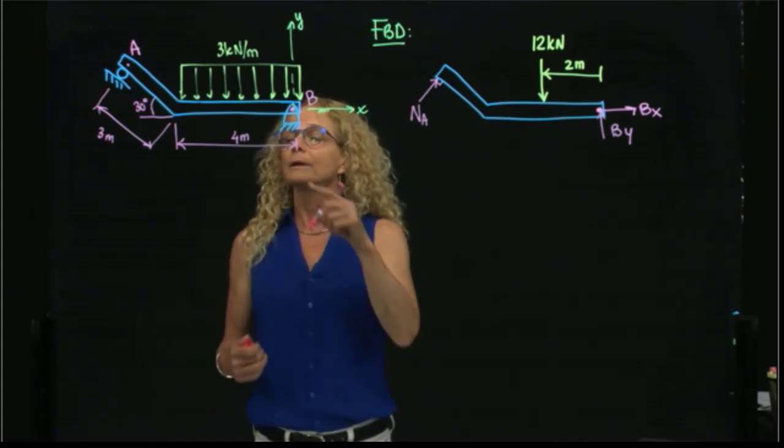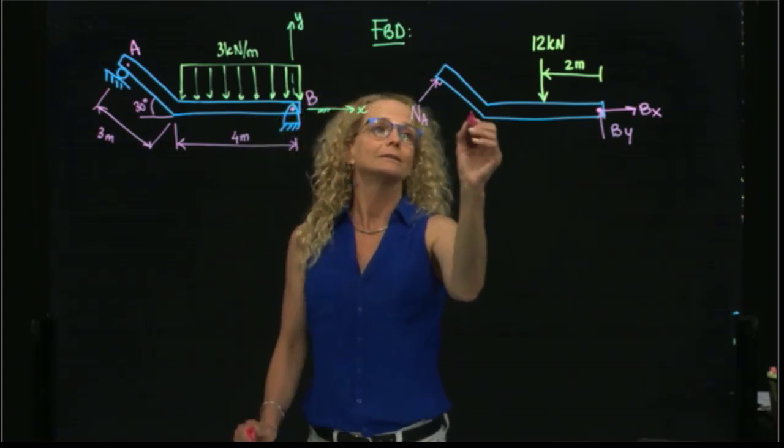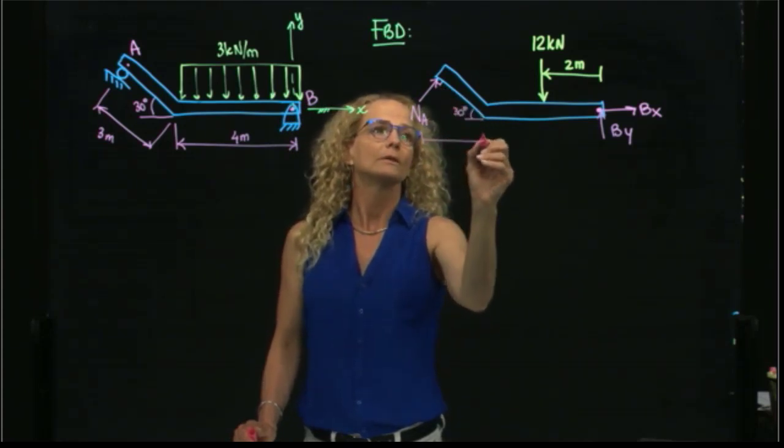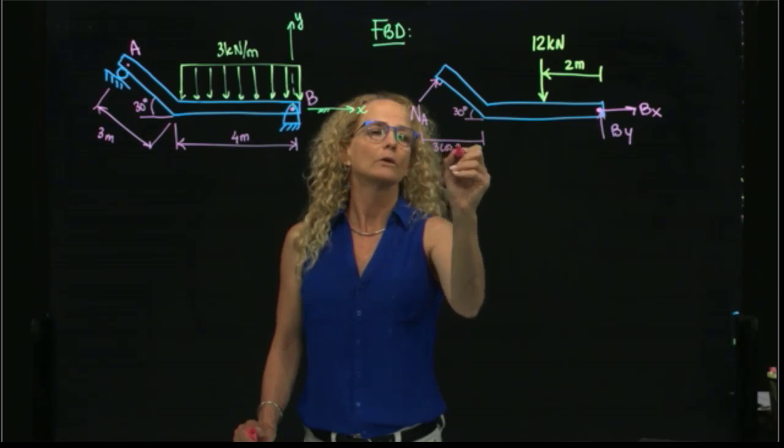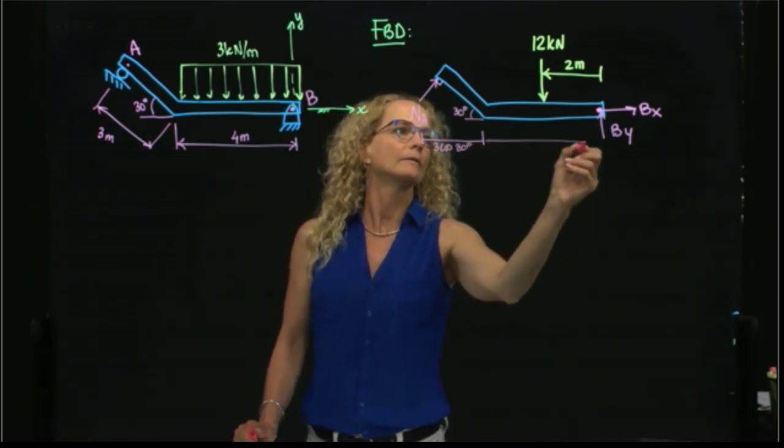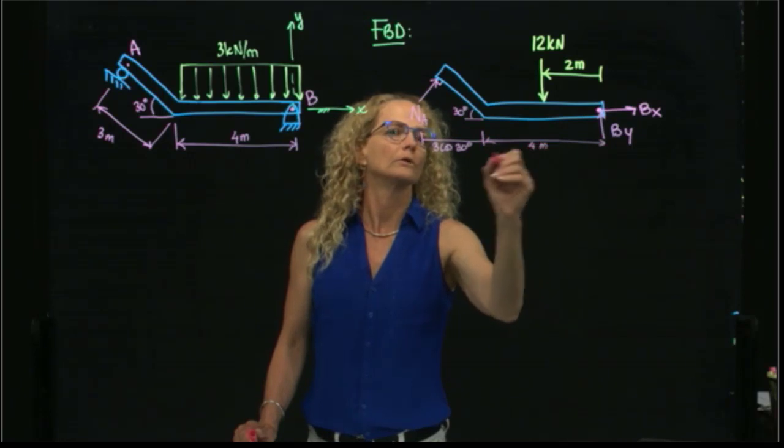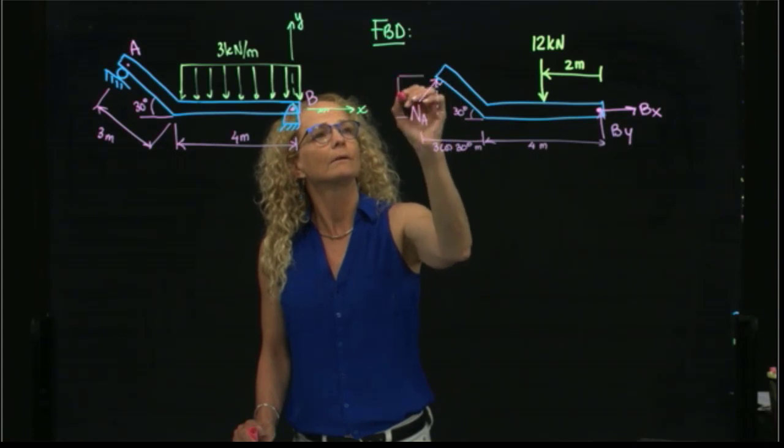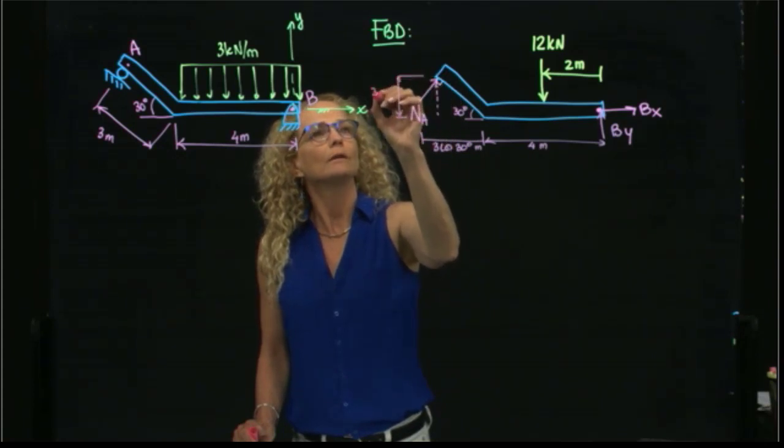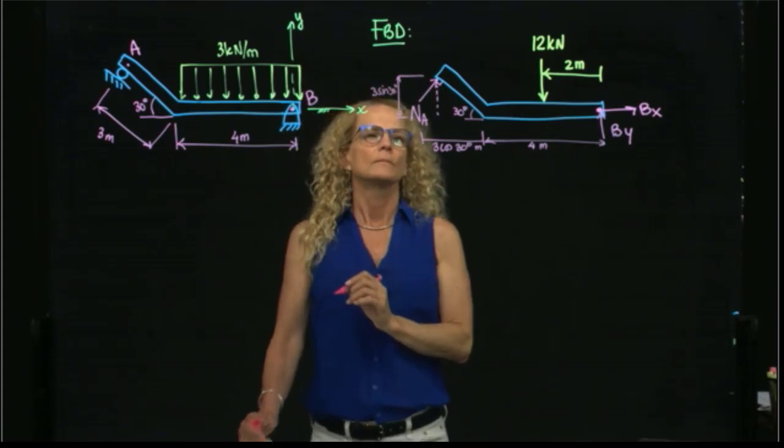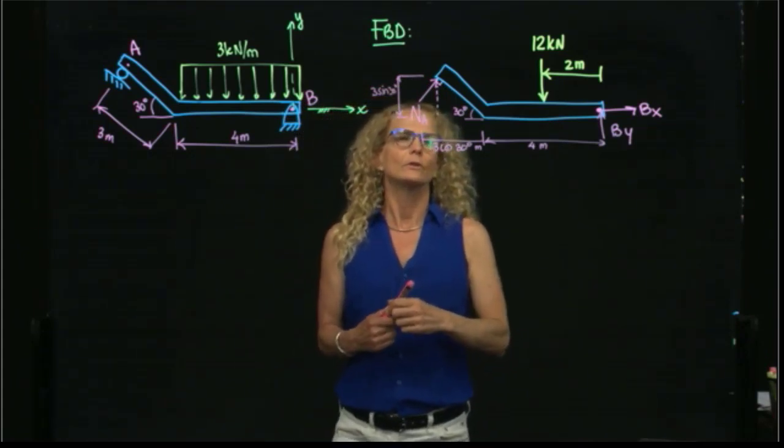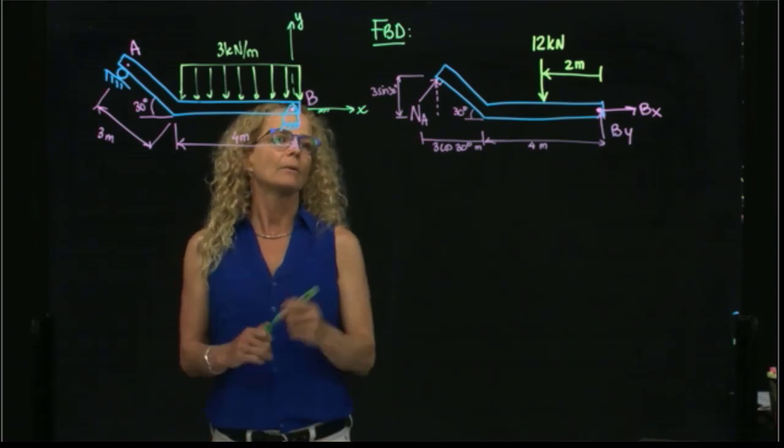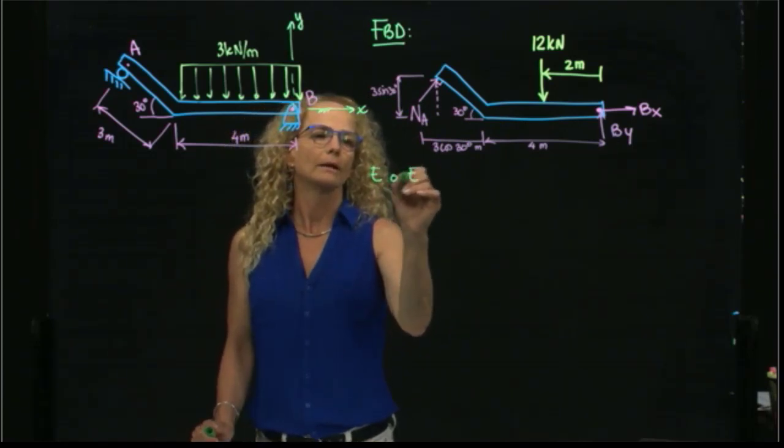We have the distances. As you see, this is 30 degrees, and this is 3 meters. So therefore, this distance here will be 3 cosine of 30, and this distance here will be 4 meters. And this height that we will also need will be 3 sine of 30. So we have all the distances we require, and then the second step is apply our equations of equilibrium.